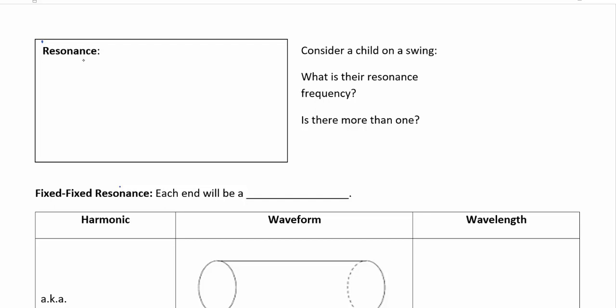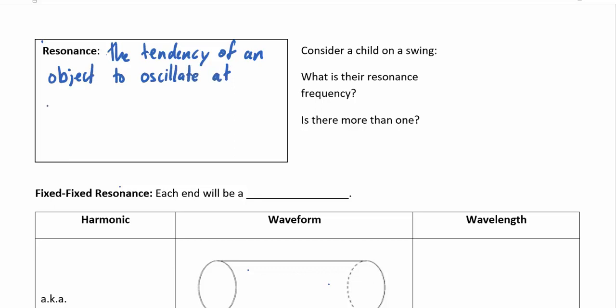This brings us to resonance, which is a phenomenon that happens all over in nature. Musical instruments are a great example. Resonance is basically the tendency of objects to vibrate or oscillate with a maximum amplitude, and this oscillation is only going to happen at very specific frequencies.